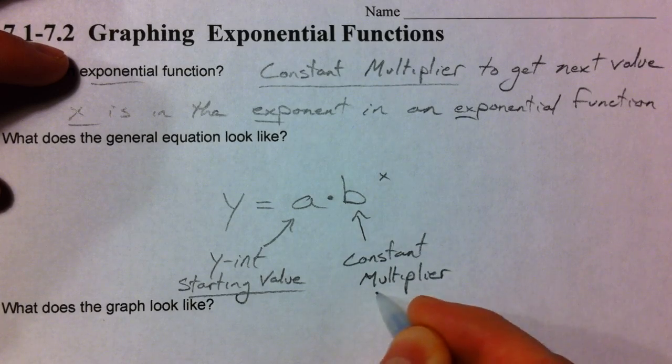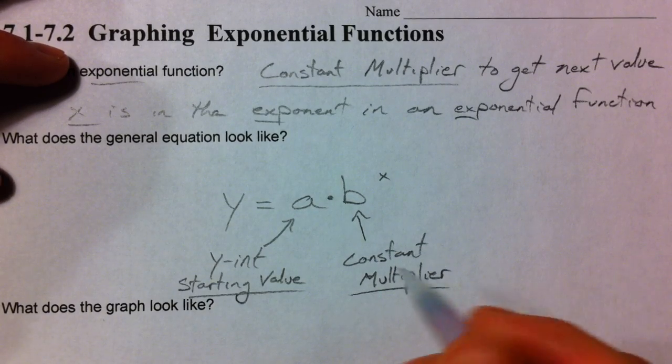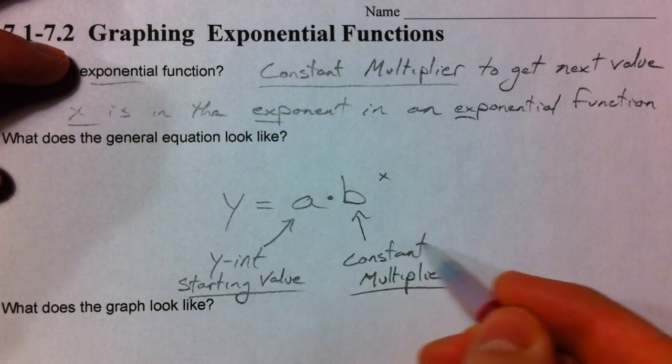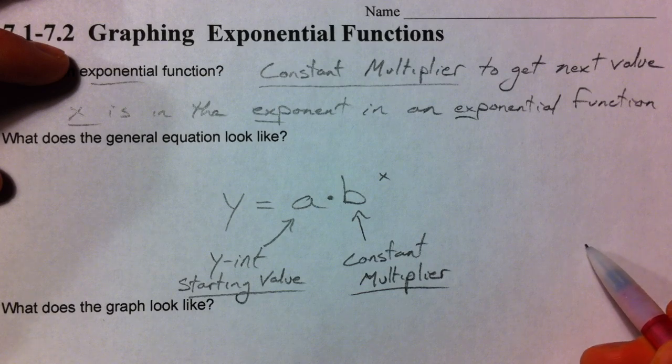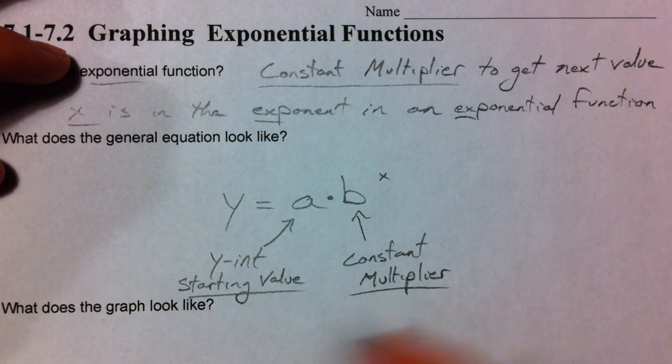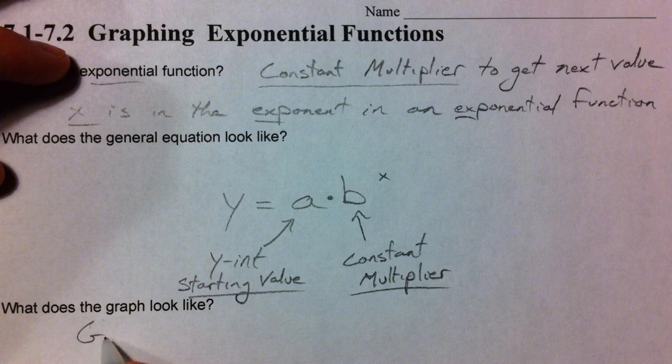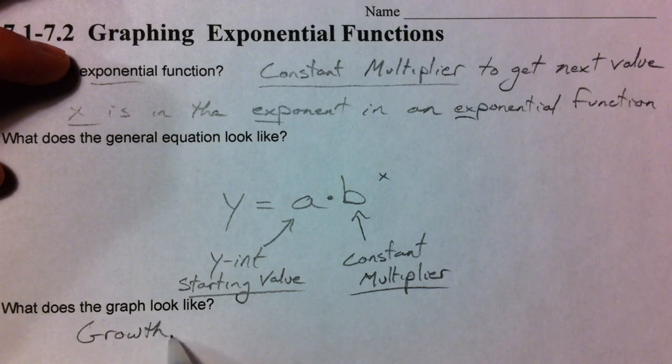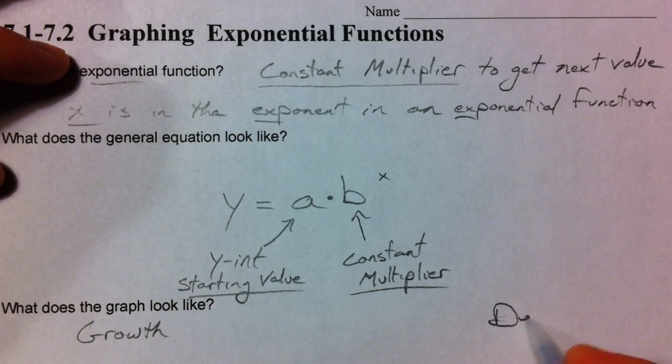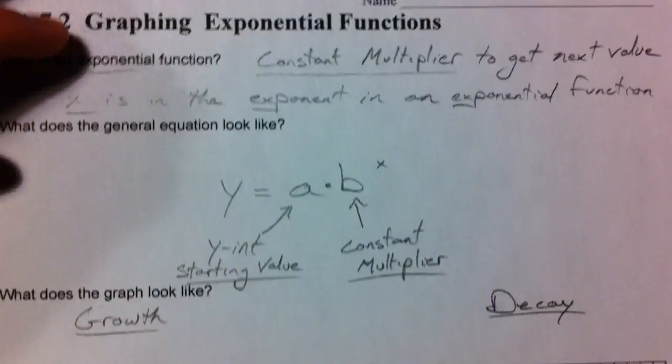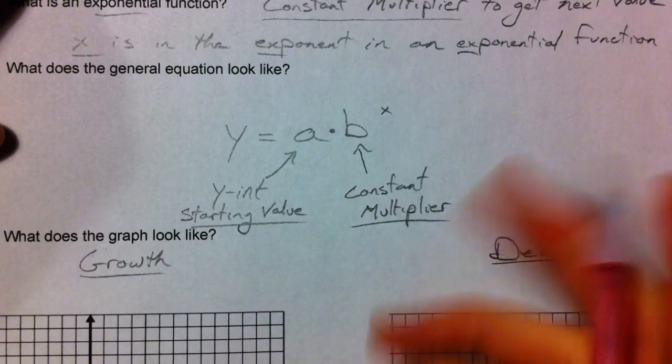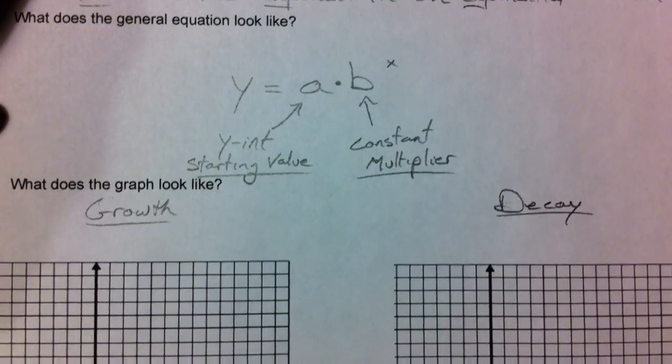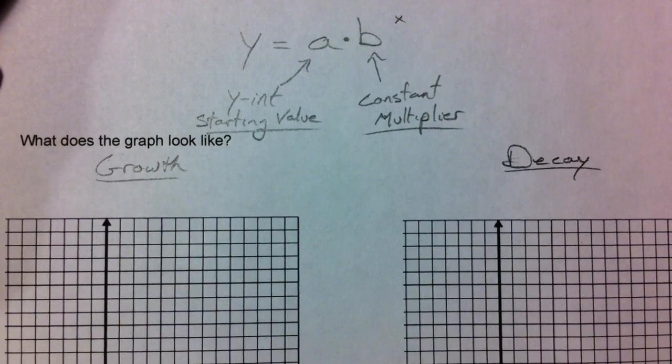In our warm-up examples, we saw that when we multiplied by 3, stuff got bigger. When we multiplied by 1 half, stuff got smaller. So, that's going to determine whether it's growth or decay. In this constant multiplier, that's also going to contain your interest rate and things like that once we get into story problems.